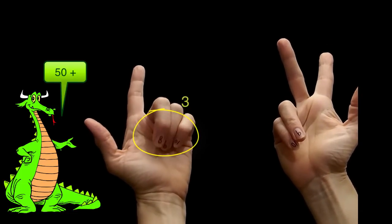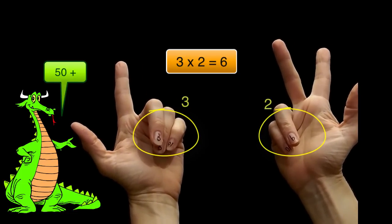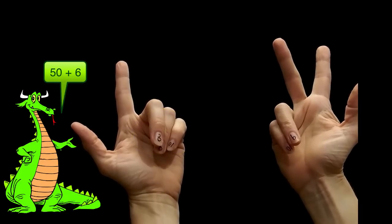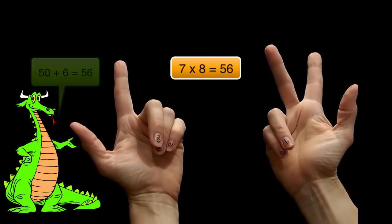Then I look at the other hand. I got 3 fingers here and 2 there. I multiply those together. 3 times 2 is 6. So I add those two numbers together. 50 plus 6 is 56. So 7 times 8 is 56.